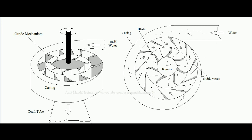Water from the casing enters this guide mechanism in the radial direction at a particular angle and is directed to interact with the rotor, or runner. The runner also consists of blades. When water hits these blades, it gives a push, and a torque is developed over the runner because force into the radial distance is torque.